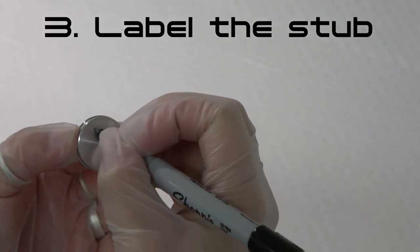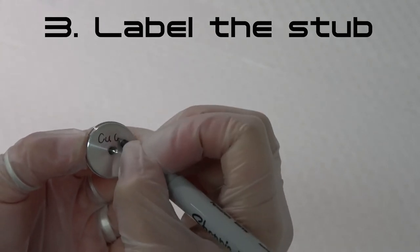Step 3: Label the underside of your SEM stub with the sample name or ID code.